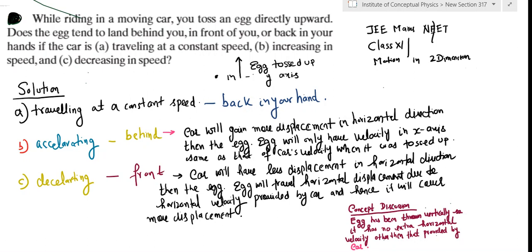Now if you look into this numerical, there is a car which is moving and you are sitting inside the car with an egg in your hand, and you throw the egg vertically upwards.